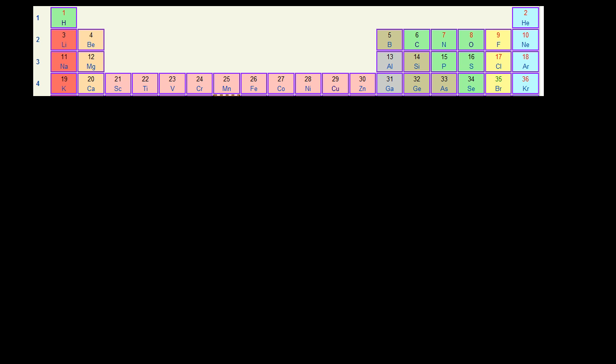We know that an element is defined by the number of protons it has. For example, potassium — we look at the periodic table of elements, and I have a snapshot of part of it here. Potassium has 19 protons. This is a little bit redundant: we know that if it's potassium, that atom has 19 protons, and if an atom has 19 protons, it is going to be potassium.